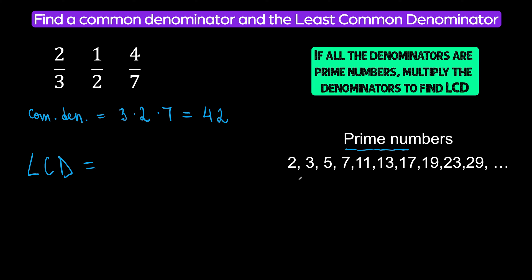A prime number — for example, three — is a number that is divisible by itself and one only. For example, seven is divisible by itself and one only. You don't see four as a prime number because four is divisible by two, by itself, and one. So it has three divisors.